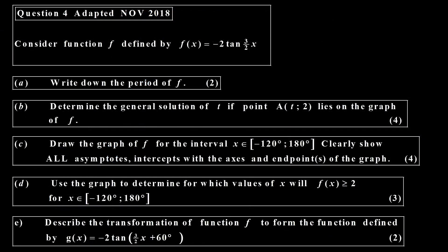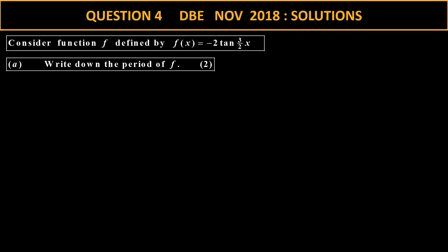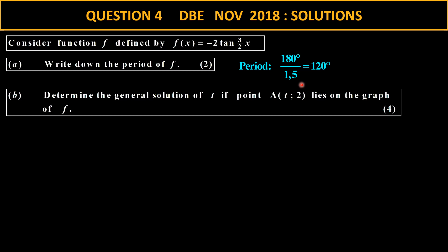Question 4 is adapted from the 2018 paper. Write down the period of f: the default period for tangent is 180, and with 3 over 2 — which is the same as 1.5 — doing the arithmetic gives 120. For the general solution, I make x equal to t and set f(x) equal to 2. Setting up the equation: negative 2 times 1.5t equals 2. Transposing the negative 2 it becomes negative 1.